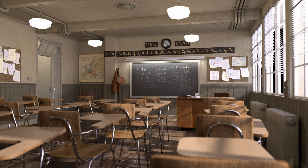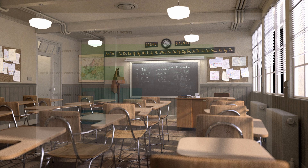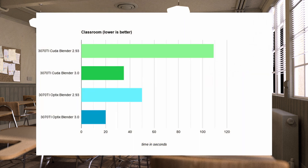The good thing is Cycles X is set to perform better on more complex scenes. Let's take a look at the classroom benchmark, which is moderately complex. Here we see a mind-blowing improvement of a minute and 14 seconds faster for CUDA in Blender 3.0. The CUDA render even beat the OptiX render time in 2.93. And the OptiX render in 3.0 also manages to shave off another 30 seconds compared to 2.93, resulting in a 20-second render. Blender 3.0 only took 32% and 40% respectively of the time that Blender 2.93 took.